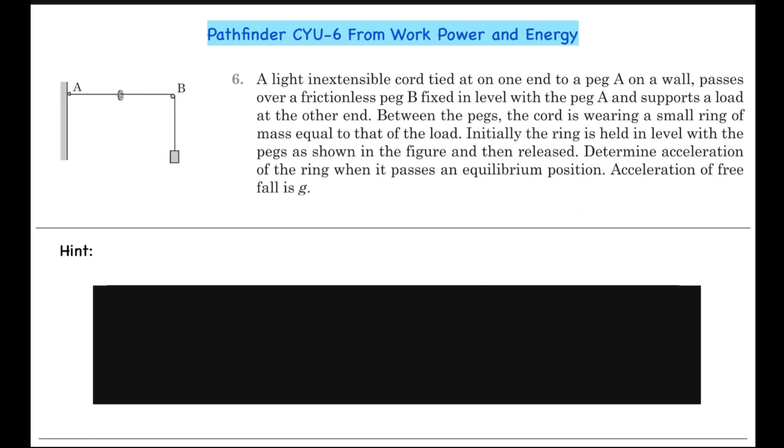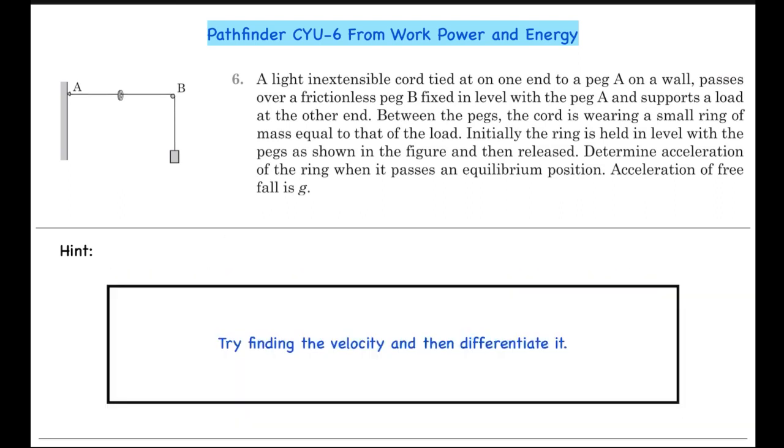Now let's look at the hint. The hint is: try finding the velocity and then differentiate it. Or you can also observe it with respect to one of the pegs—that would also give you another solution. If you want to give this a try again with this hint, you should do it now.